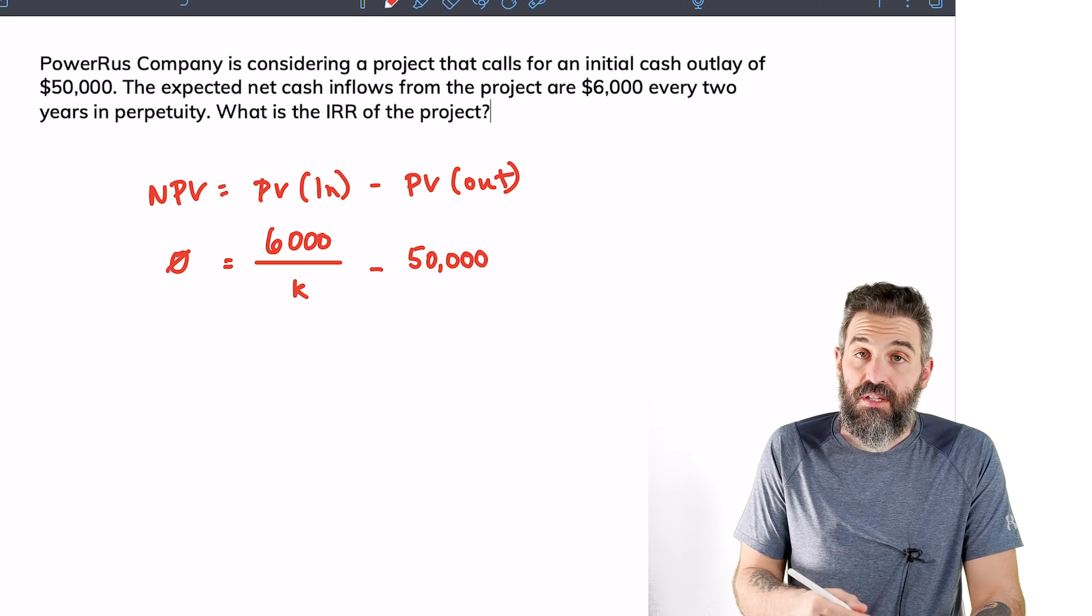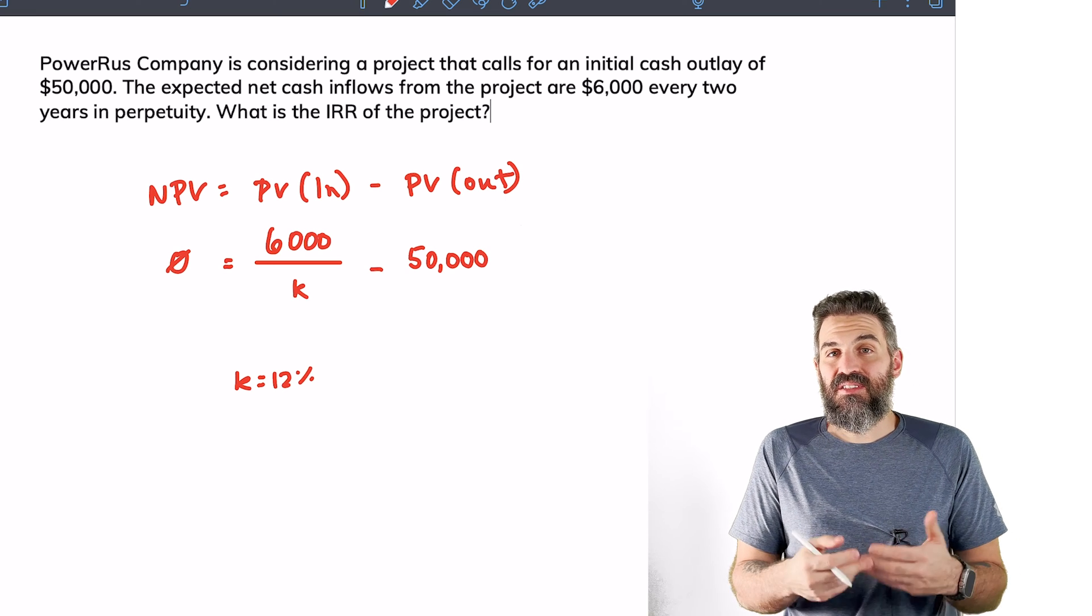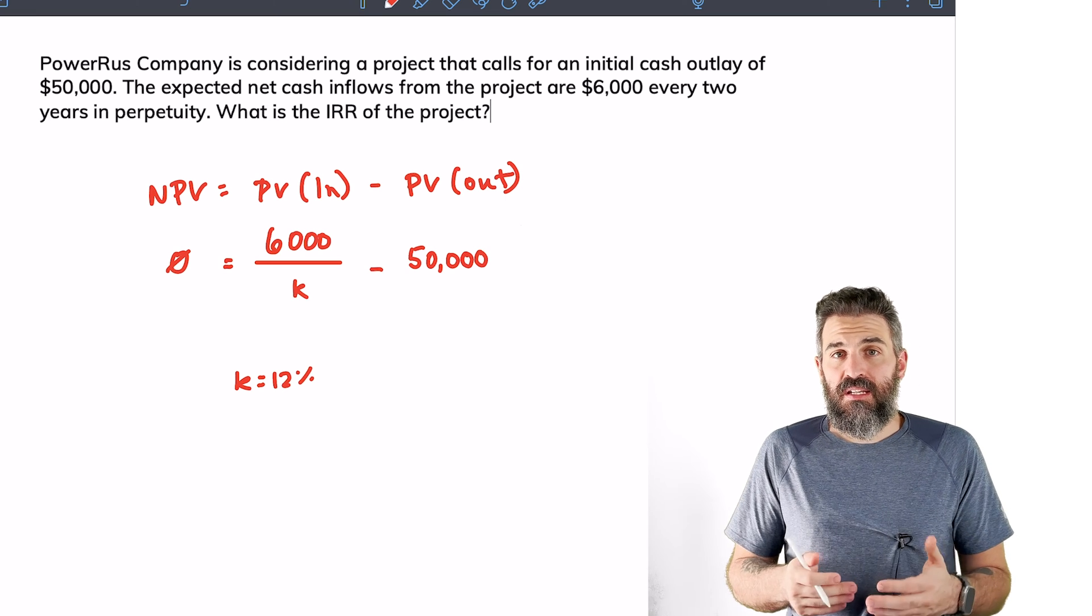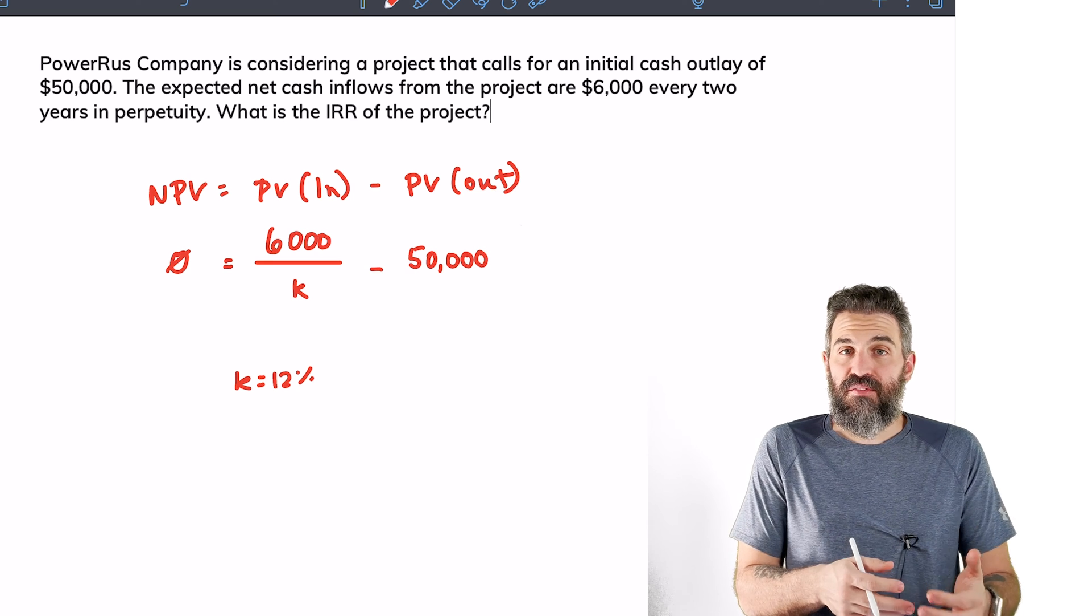Now we're going to algebraically solve for this, and you get 12%. This isn't the answer because this is a two-year perpetual payment - this is an effective two-year rate, but an internal rate of return should be expressed annually.